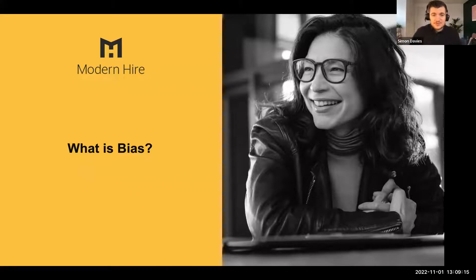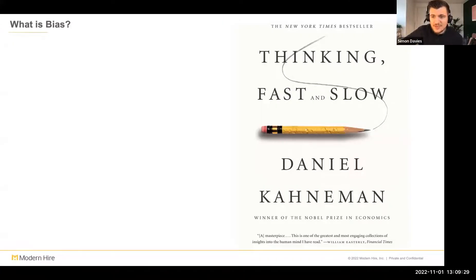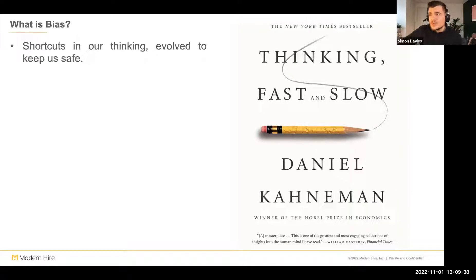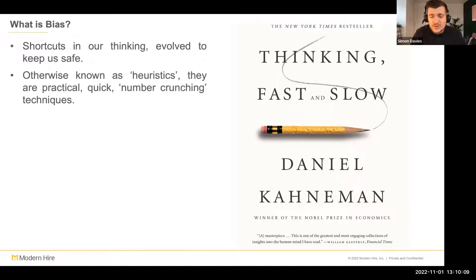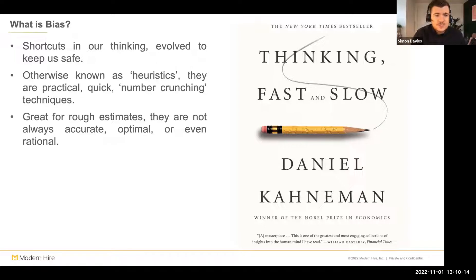We cannot hope to battle bias successfully if we can't first define it accurately. We can trace our interest in bias and decision-making back to the work of Daniel Kahneman and Amos Tversky and their seminal research into human decision-making. Kahneman distilled his research into his best-selling book Thinking Fast and Slow — very informative, a little dry in places, but there's a lot of rich information. Kahneman very famously won the Nobel Prize in Economics for his work. In short, biases are shortcuts in our thinking — evolved proclivities, known as heuristics — practical, quick, number-crunching techniques and broad rules of thumb.